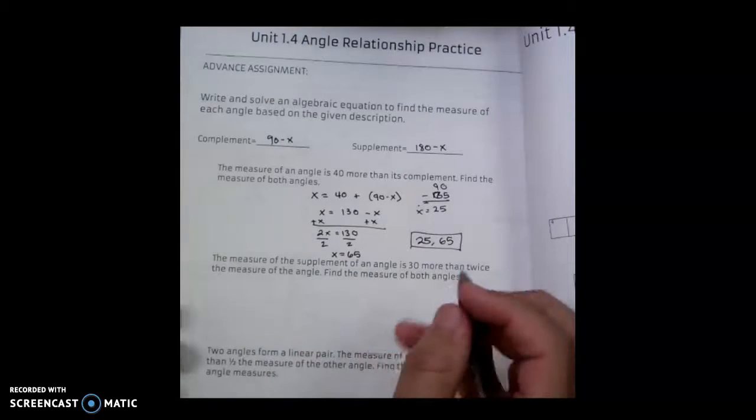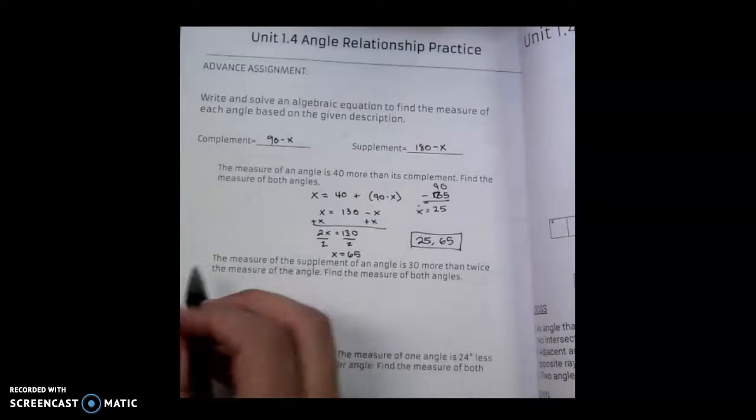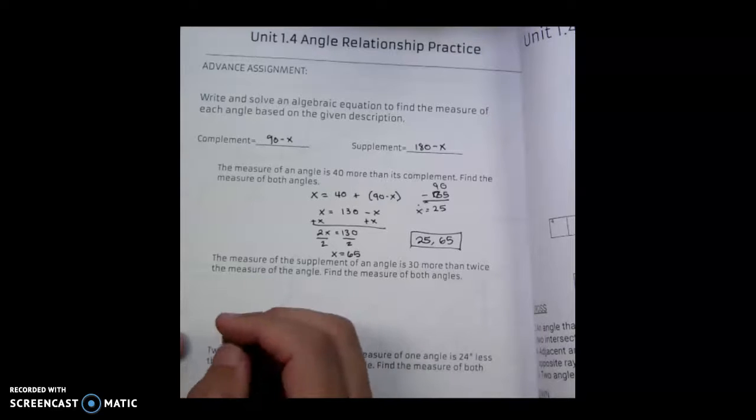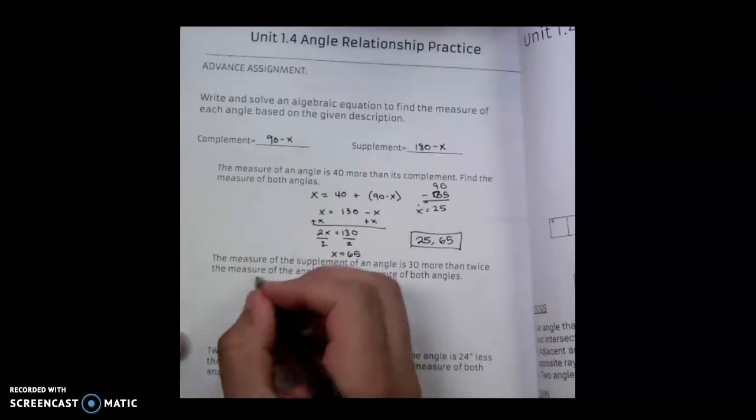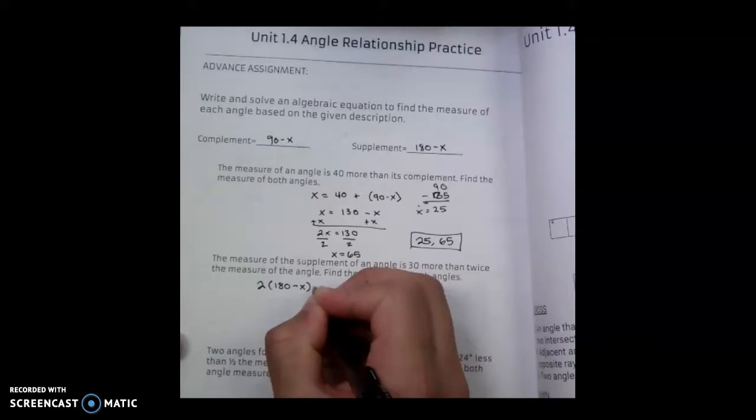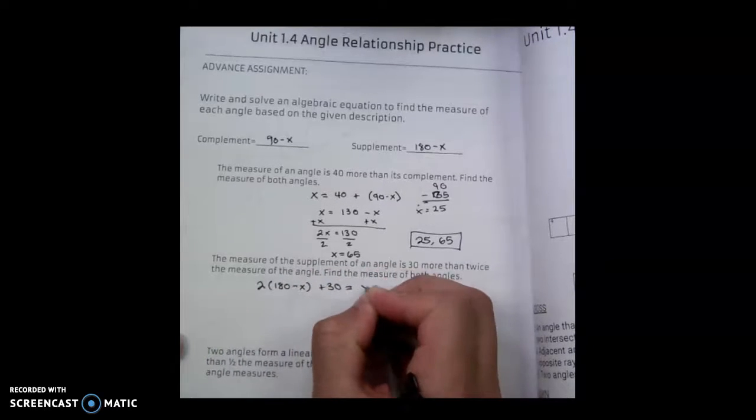I apologize for the music, but we'll set the mood a little bit. The next question says the measure of the supplement of an angle is 30 more than twice the measure of an angle. So we have 2 times the supplement, which is 180 minus x, plus 30 equals our other angle.